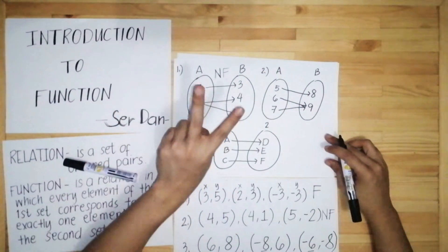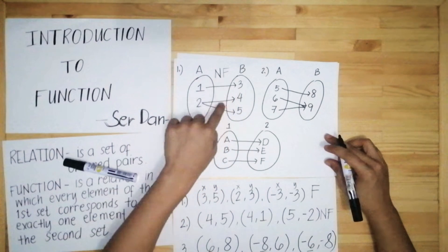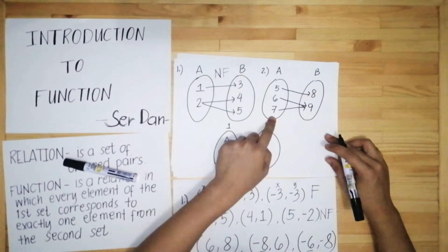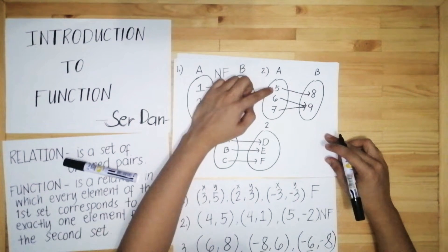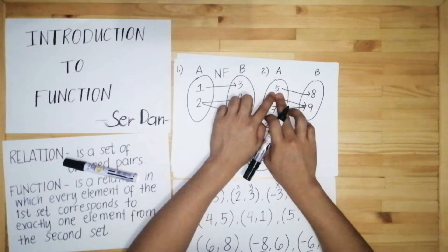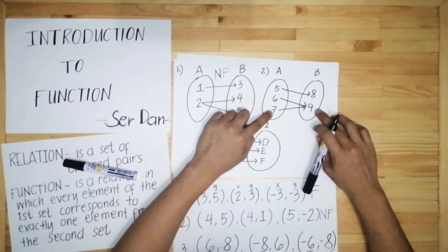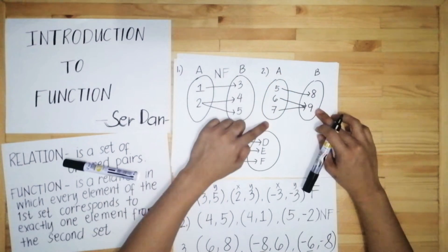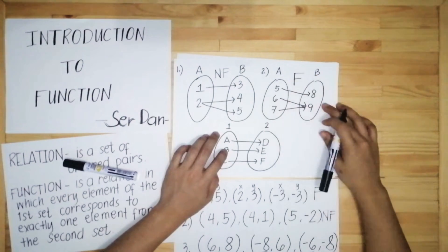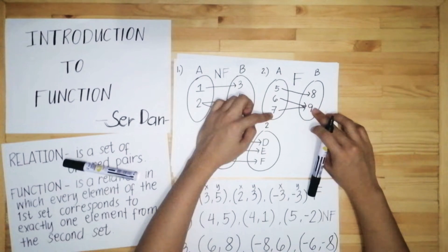Number one is not a function because element 2 has two correspondences — we call this a one-to-many correspondence. Now for number two, the elements in the domain are 5, 6, and 7, and the range values are 8 and 9. Element 5 corresponds to 8, element 6 corresponds to 9, and element 7 also corresponds to 9. Each element in set A has exactly one correspondence, so this is a function. We call this a many-to-one correspondence.